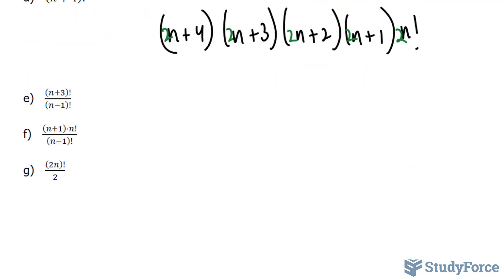Now let's expand on this idea and do a few more factorial examples with variables. In question e, we have (n+3) in brackets factorial over (n-1) factorial. I'll focus on the top part. (n+3) factorial is the same thing as saying (n+3), (n+2). Notice I'm subtracting 1 from 3. (n+1) times n. And we'll continue with (n-1). I'll stop at that.